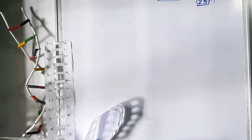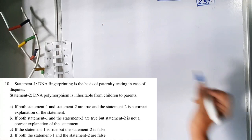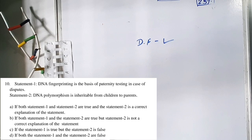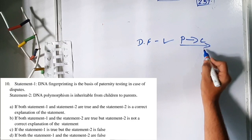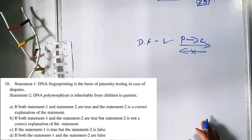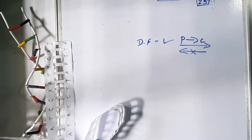Question 10: Statement 1 — DNA fingerprinting is the basis of paternity testing in case of disputes — is correct. Statement 2 — DNA polymorphism is inheritable from children to parents — is wrong; inheritance goes from parents to children, not the reverse. So statement 1 is correct but statement 2 is wrong. Option C is correct.